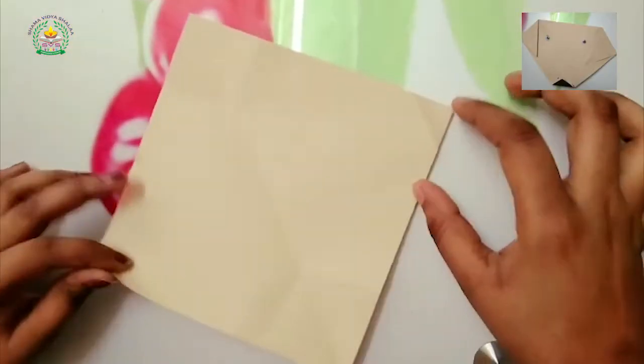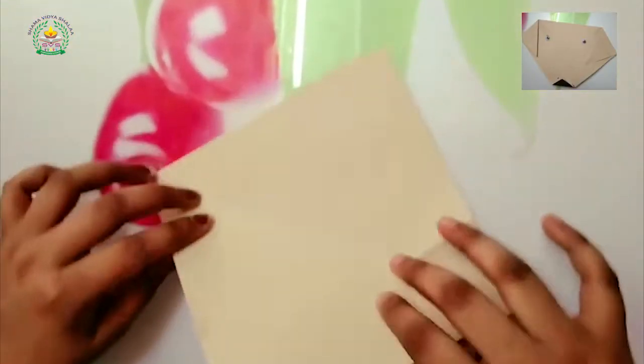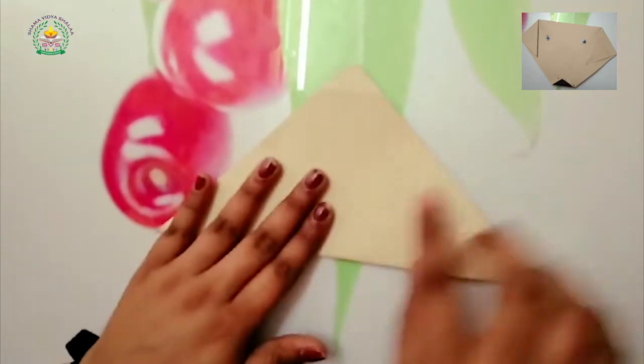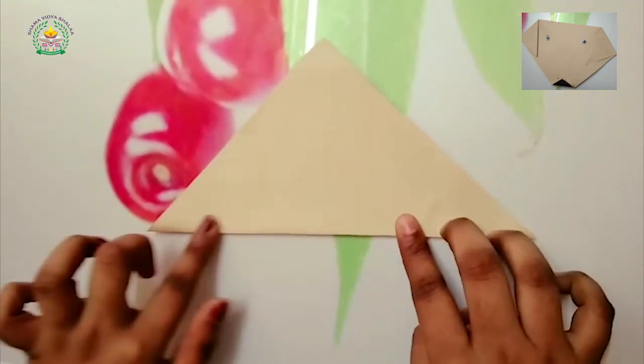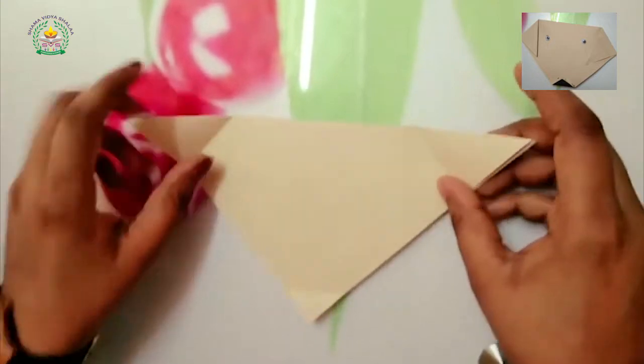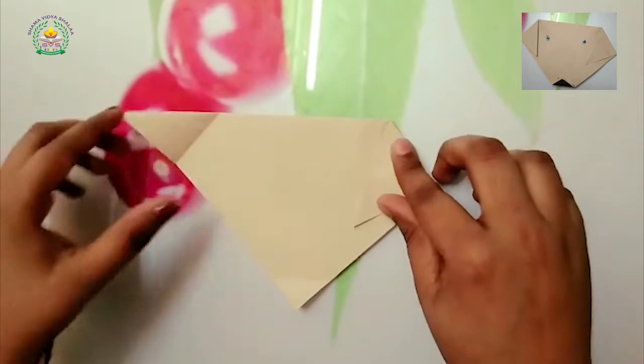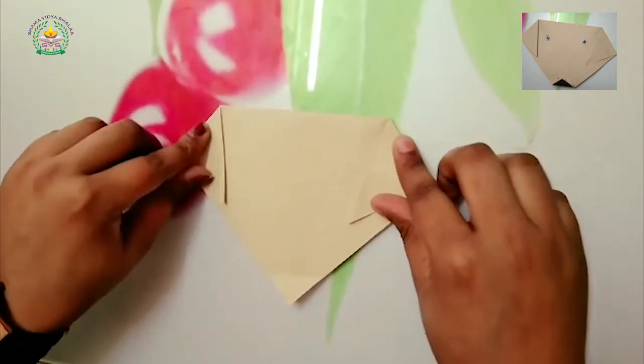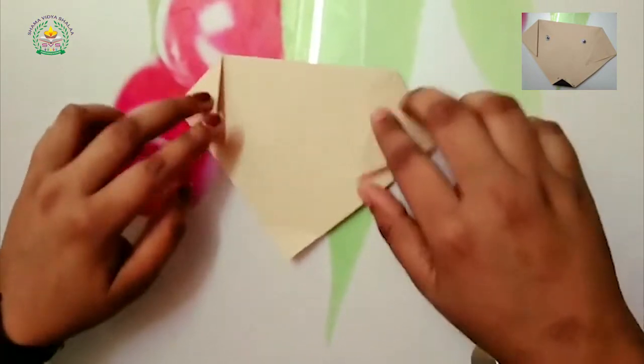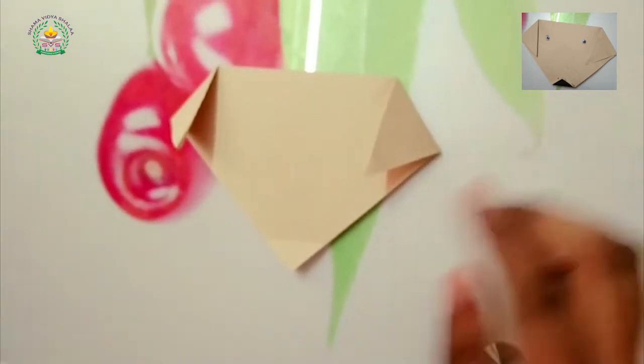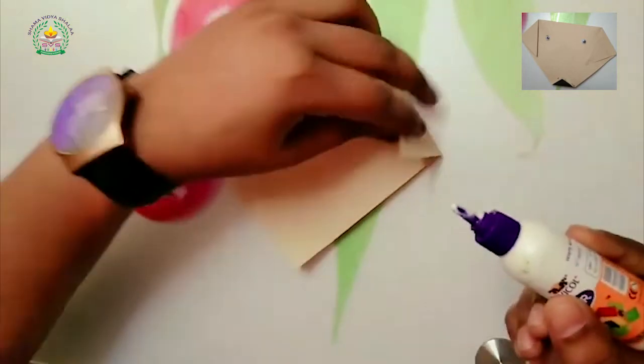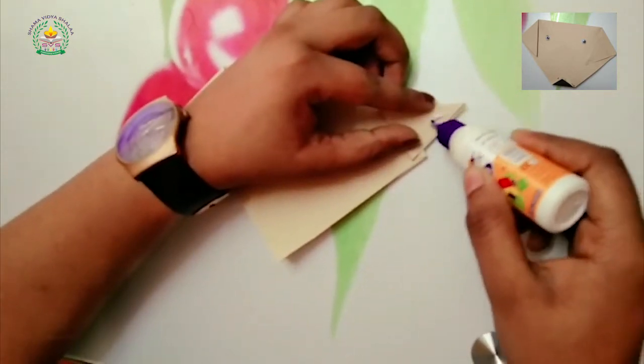So let's start. Take a sheet and fold it to the opposite side. Then here, the left side right, fold it like this. Then take a glue and just apply.